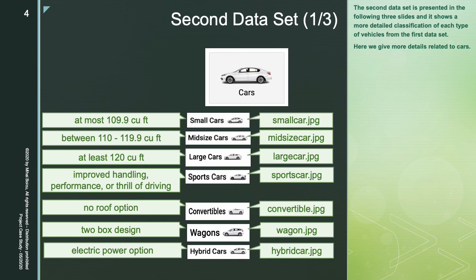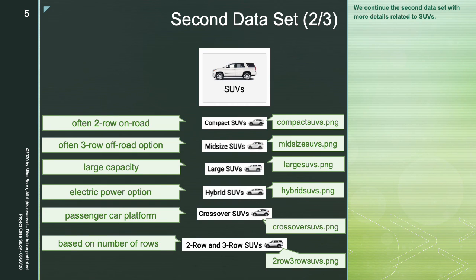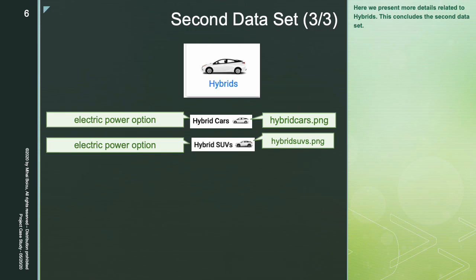The second dataset is presented in the following three slides and it shows a more detailed classification of each type of vehicle from the first dataset. Here we give more details related to cars, then more details related to SUVs, and here we present more details related to hybrids. This concludes the second dataset.